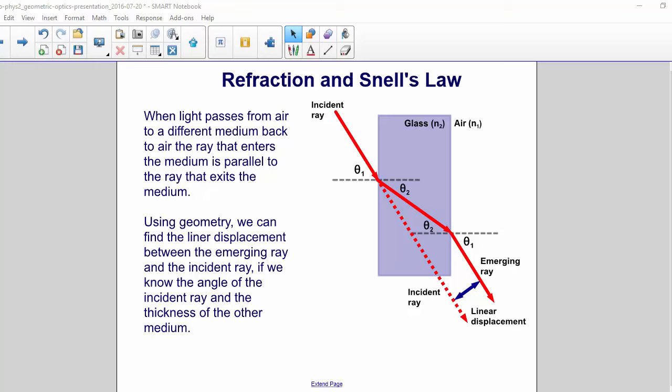An example you might see is a question asking about linear displacement. When light passes from air to a different medium back to air, the ray that enters the medium is parallel to the ray that exits the medium. Using geometry, we can find the linear displacement between the emerging ray and the incident ray if we know the angle of the incident ray and the thickness of the other medium.